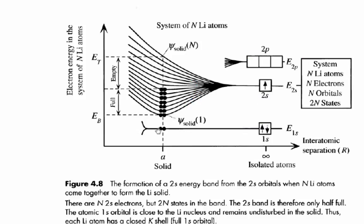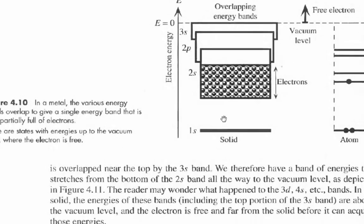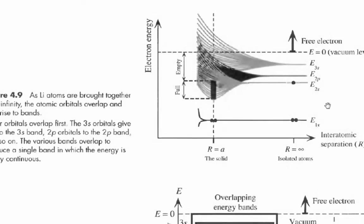And of course, these are the core electrons that are active in the x-ray emission process. Of course, not for light elements. Here's a picture of the same thing.